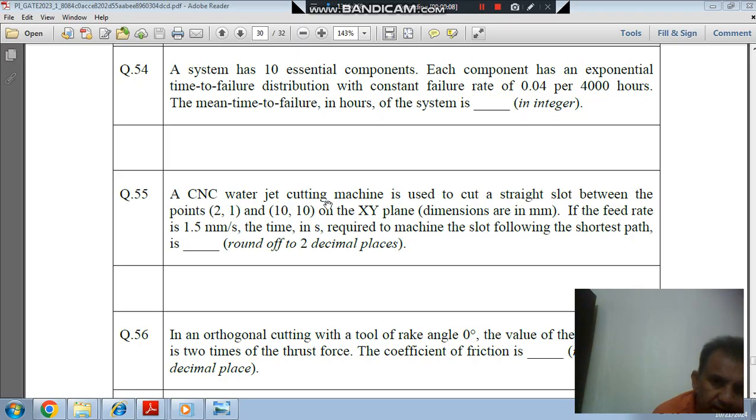Question number 65: A CNC water jet cutting machine is used to cut a straight slot between the points (2,1) and (10,10) on the XY plane. Dimensions are in mm. If the feed rate is 1.5 mm per second, the time in seconds required to machine the slot following the shortest path is (round up to two decimal places).